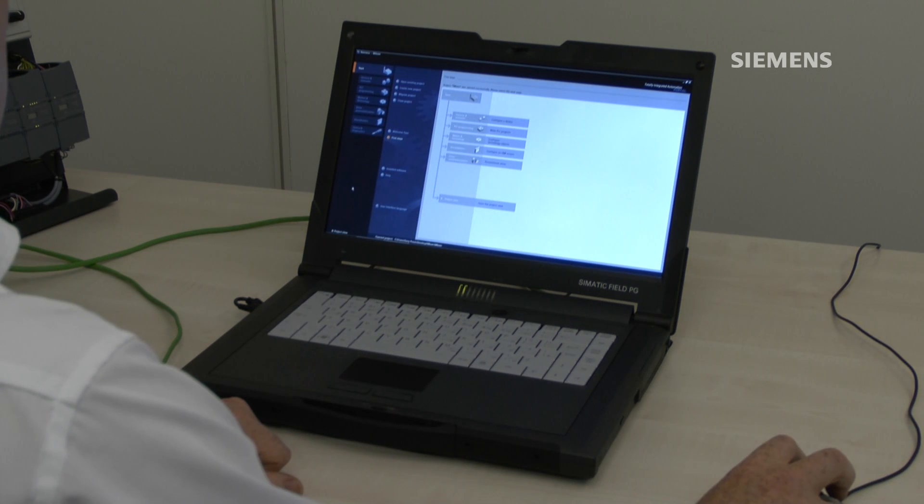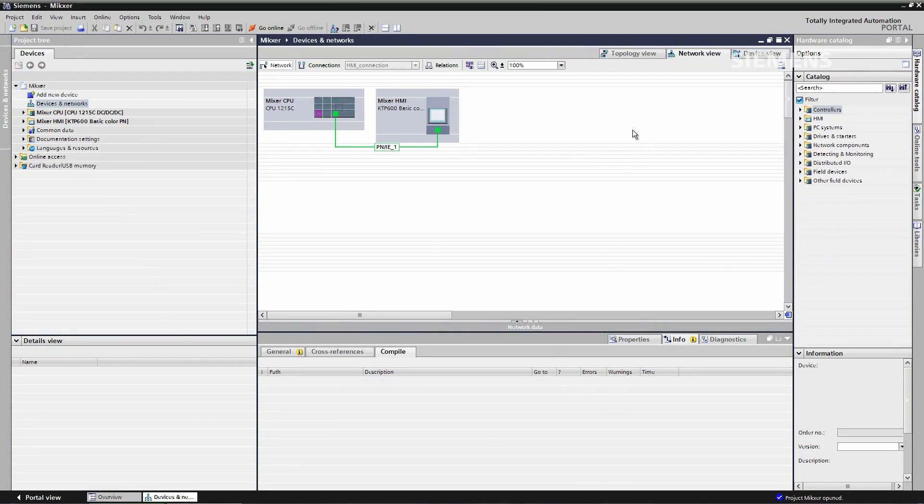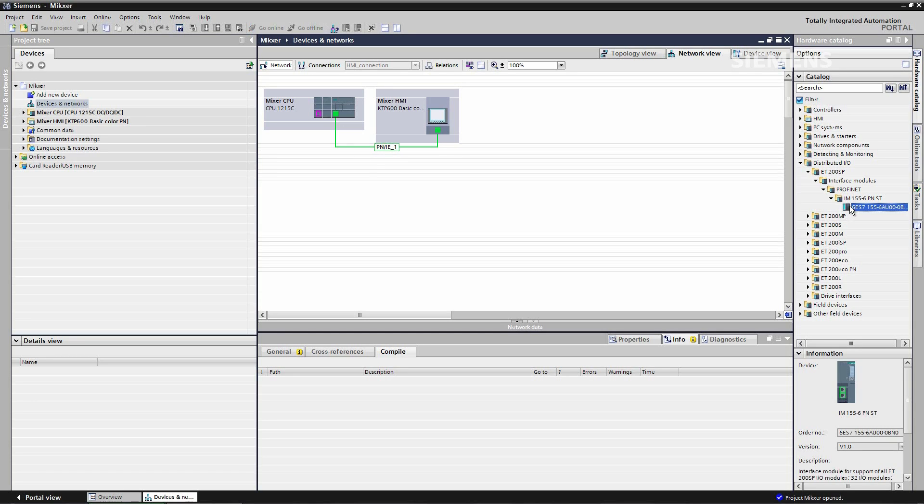To configure the ET200SP I need to be in project view and I need to be in devices and networks. In devices and networks I use distributed IO and I expand ET200SP into the interface modules, into PROFINET and then pick up a 6C071566AU000AB0. I drop one of these onto my work area and now I need to assign it to a CPU and a network.